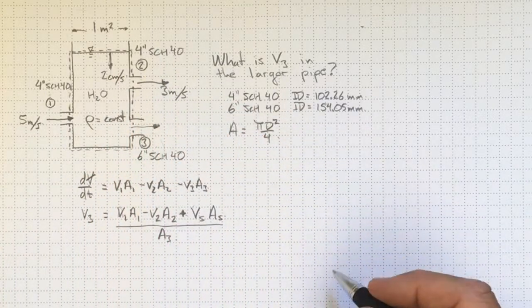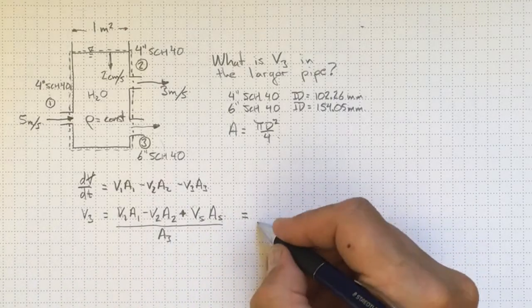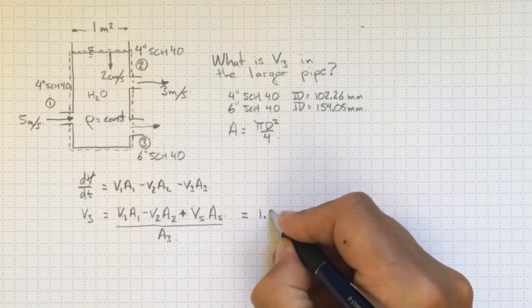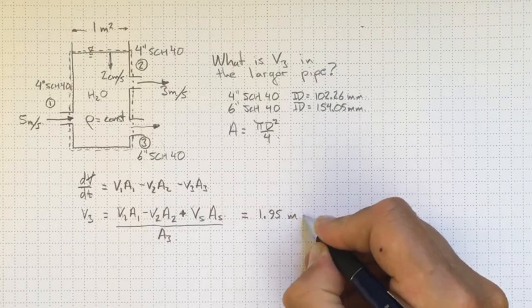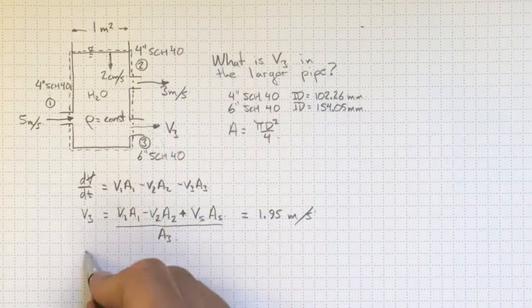The 5 and the 3 meters per second. So I'll wind up with, once I plug in the numbers, 1.95 meters per second is the outflow here at V3.